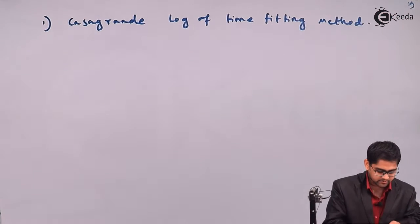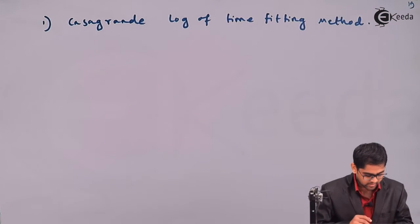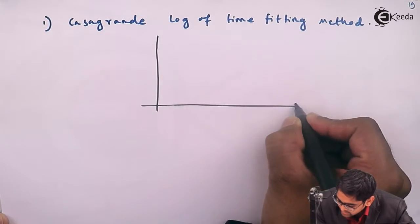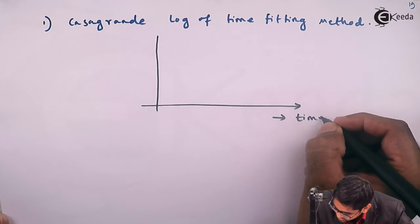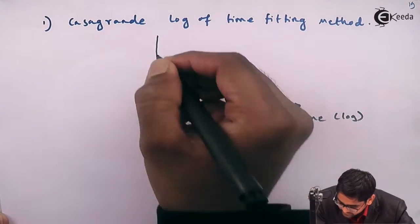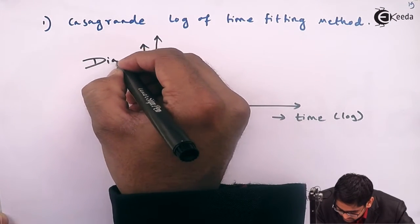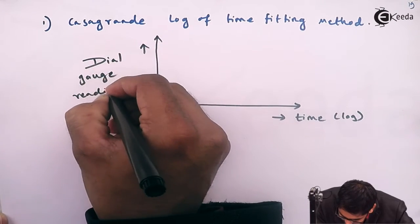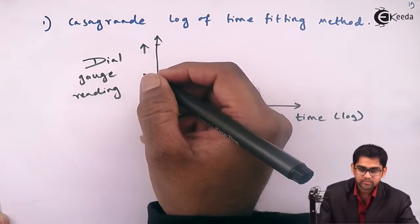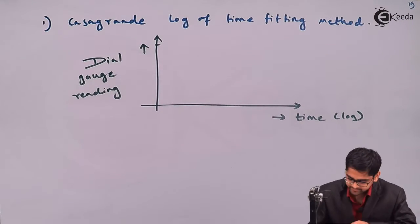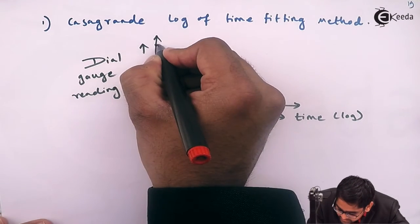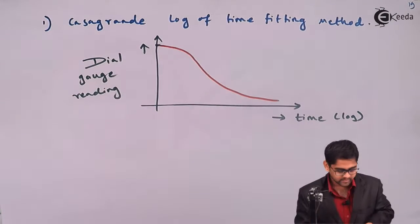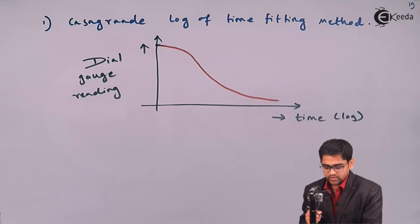For the Casagrande method, we draw a graph of dial gauge reading versus time on a logarithmic axis. On the y-axis is the dial gauge reading, and those readings increase from top to bottom — it is a reverse scale. The plot gives an S-shaped curve.